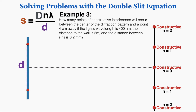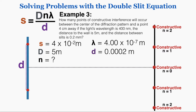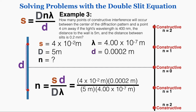Example number three asks: how many points of constructive interference will occur between the center of the diffraction pattern and 0.4 centimeters away, if the light's wavelength is 400 nanometers, the distance to the wall is 5 meters, and the distance between slits is 0.2 millimeters? Because n measures the number of points of constructive interference, that's what we're solving for. Rearranging the equation to solve for n and plugging in the values, I get n equals 4.